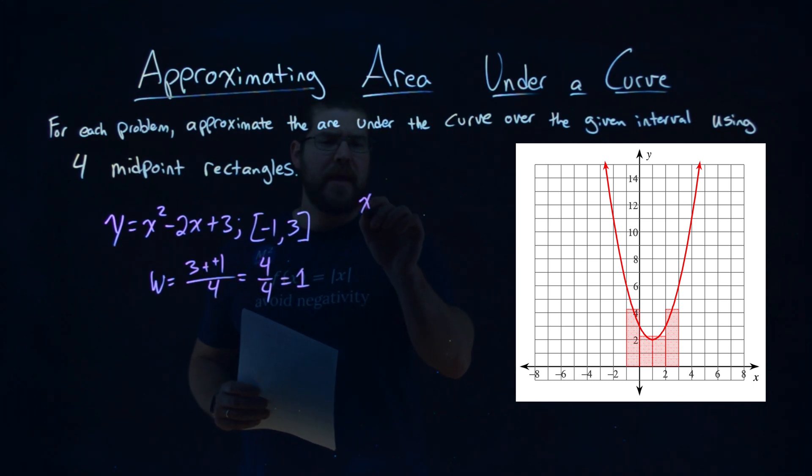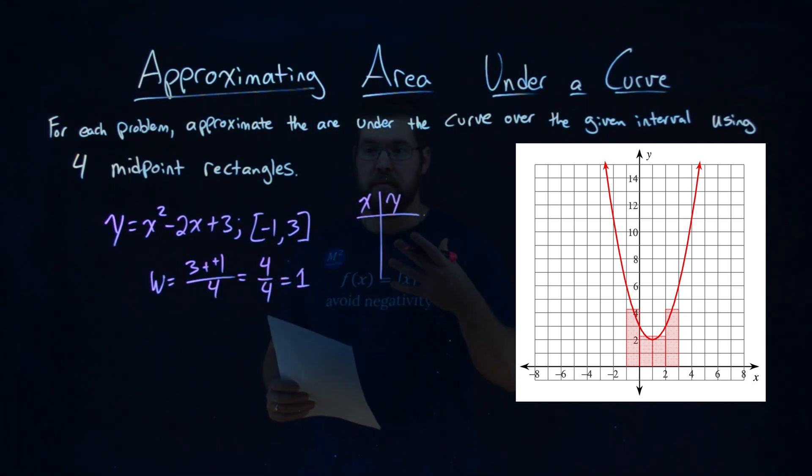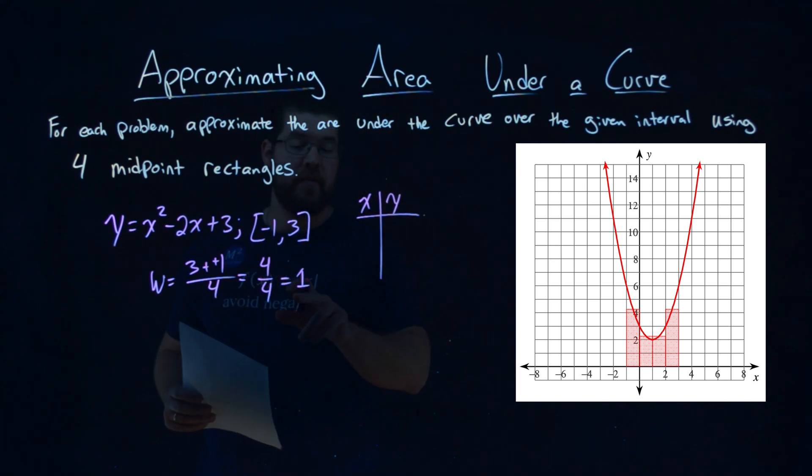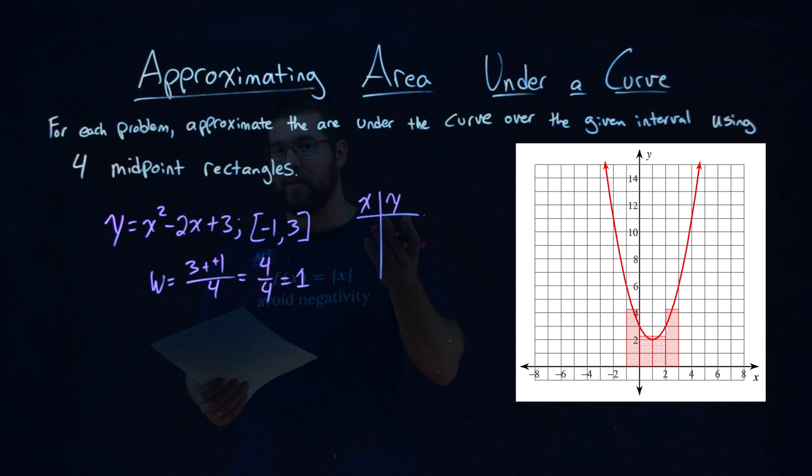So we have to make a table here, and we need to find what x-values are the midpoints of each rectangle. Well, that's actually pretty simple. If the width of each rectangle is 1, the midpoint is halfway of that, so the width is 0.5, right?